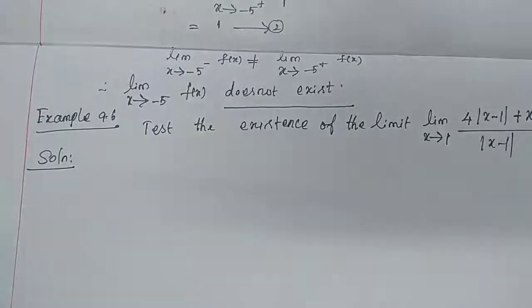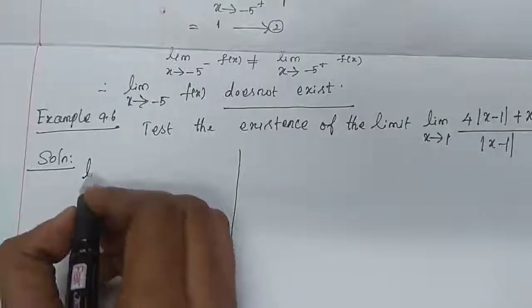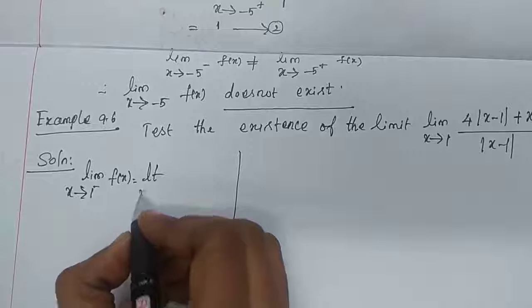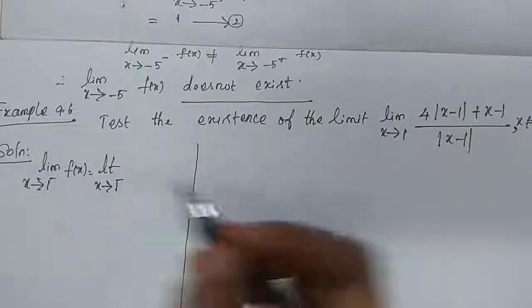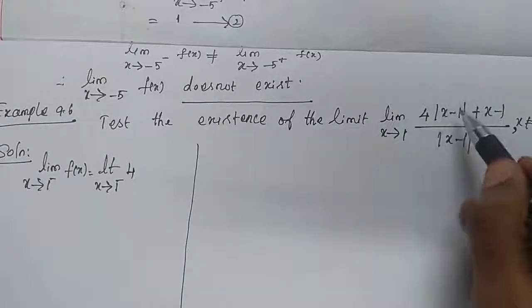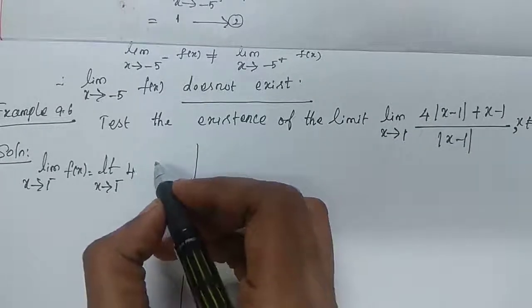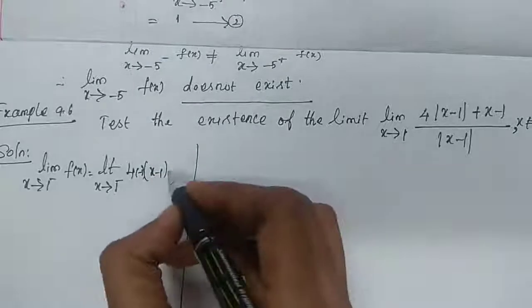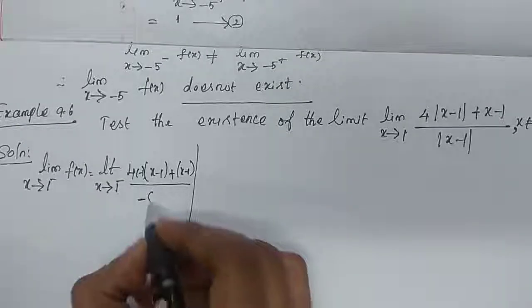Solution: First find the left limit and right limit. Left limit = lim (x→1⁻) f(x). For x approaching from the left of 1, x < 1, so |x−1| = −(x−1). Therefore, the numerator becomes 4·(−(x−1)) + (x−1) = −4(x−1) + (x−1), and the denominator is −(x−1).